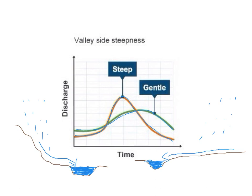Steep sided valley sides have a flashy hydrograph. The gentle one has a non-flashy hydrograph shape.